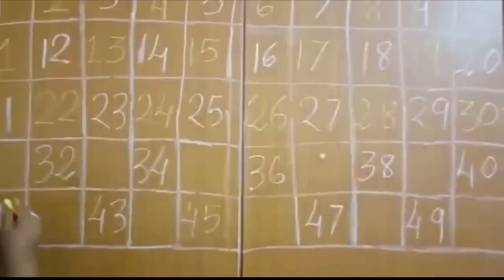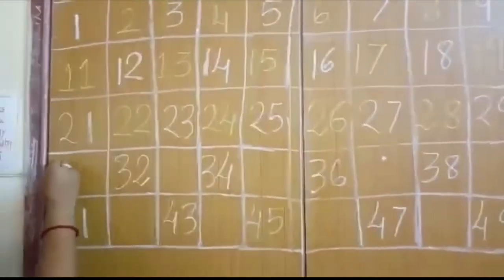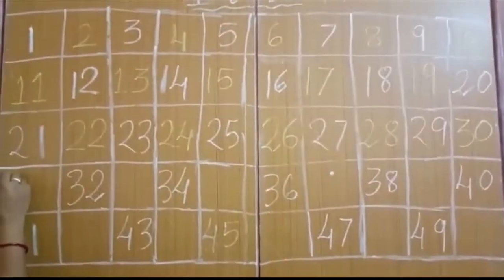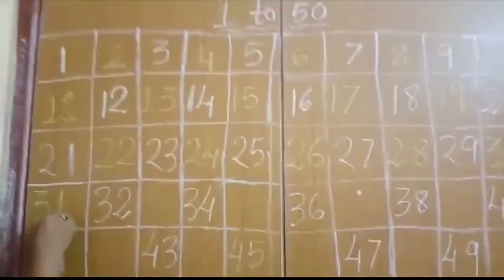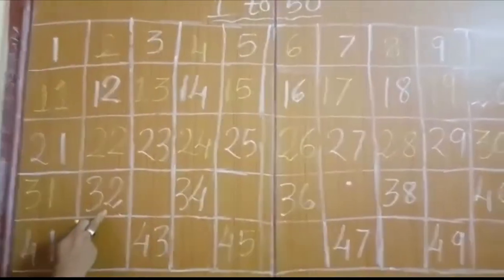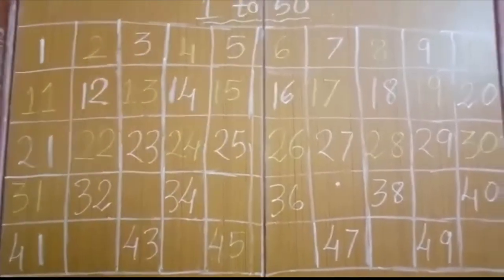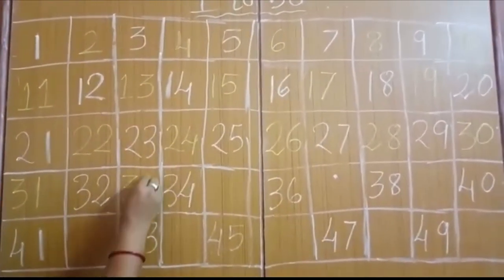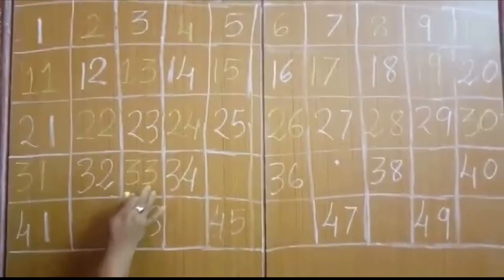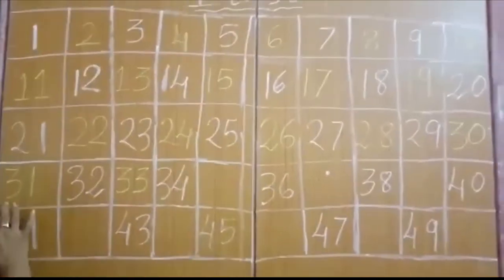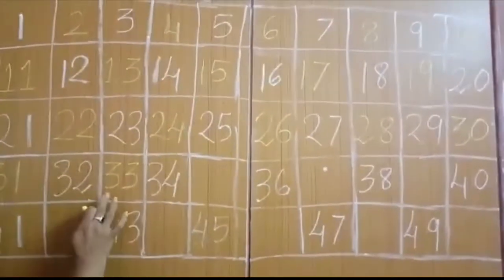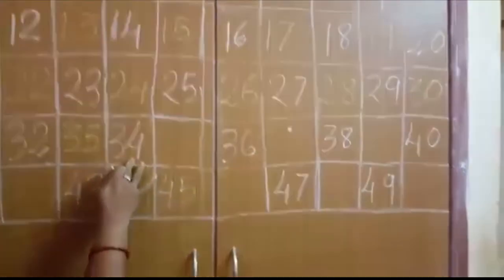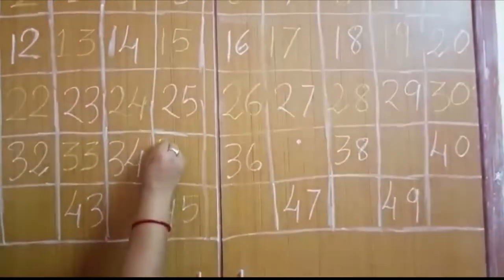30. Then after 30, what number will come after 30? 31. 32. Then what number? 33. So 31, 32, 33, 34, then 35.